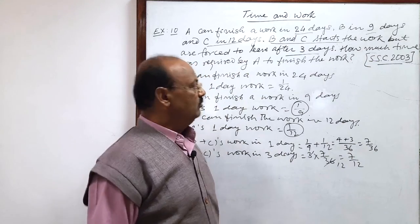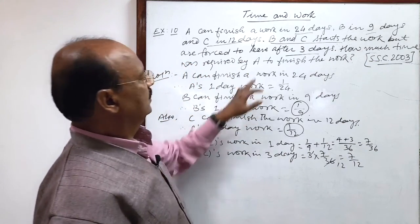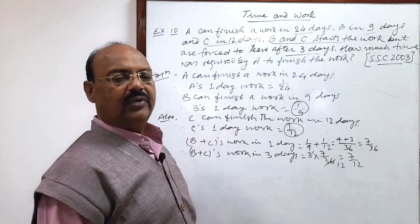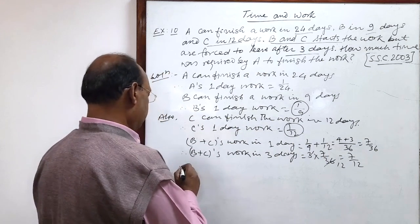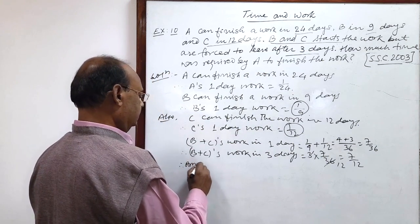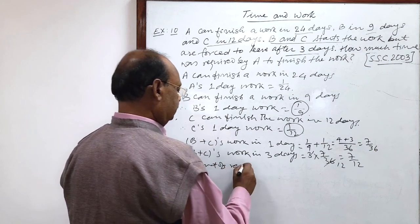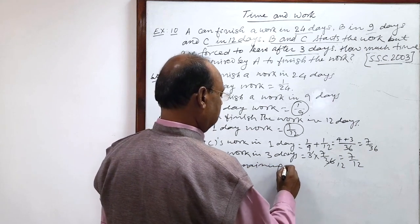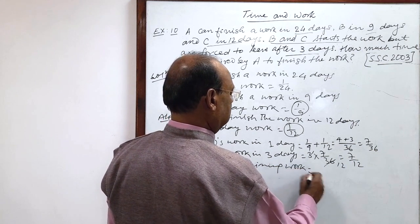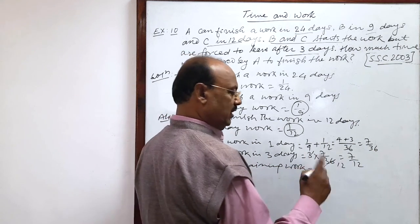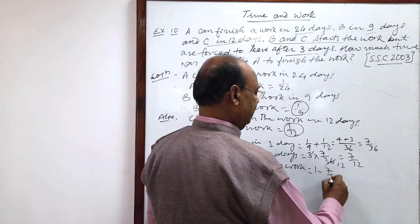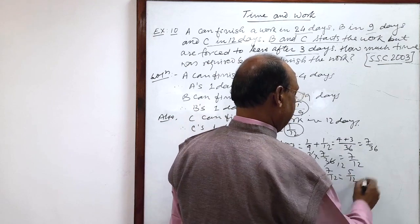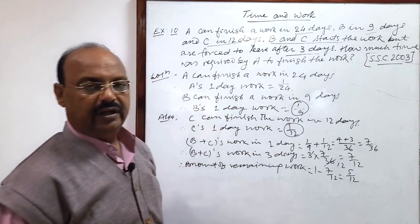And remaining work will be completed by A. So, first of all, let us see what is the remaining work? Amount of work remaining: 1 minus 7 by 12. And this is equal to 5 by 12 work is remaining.